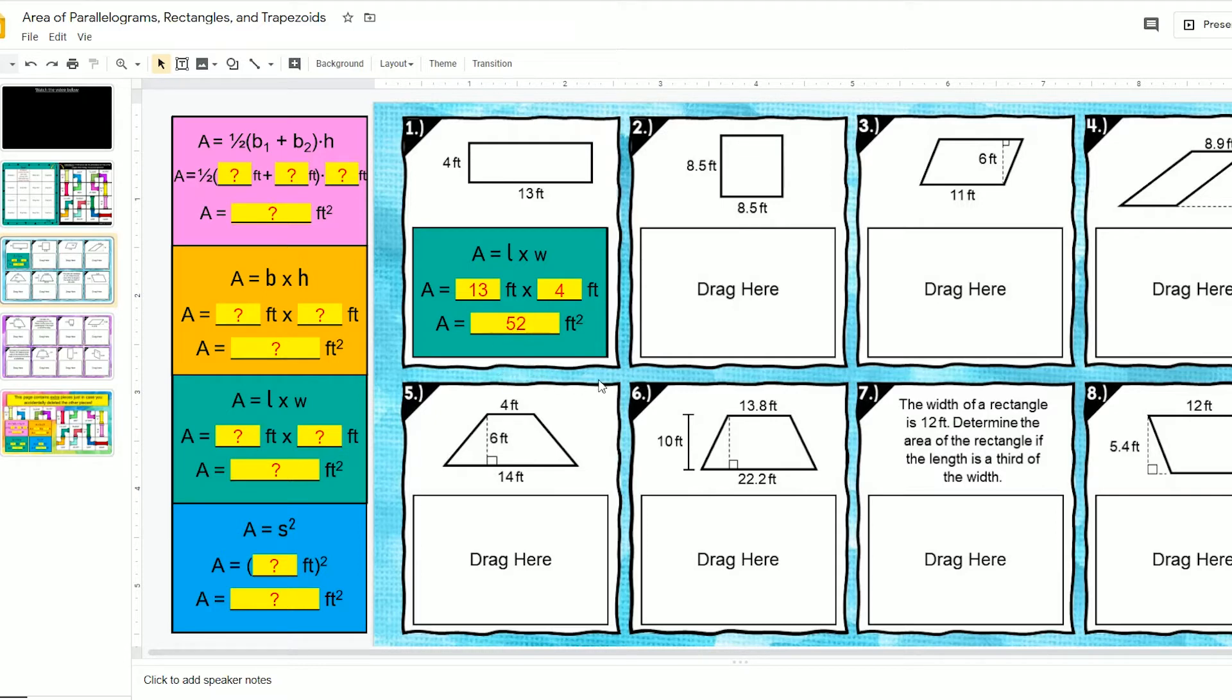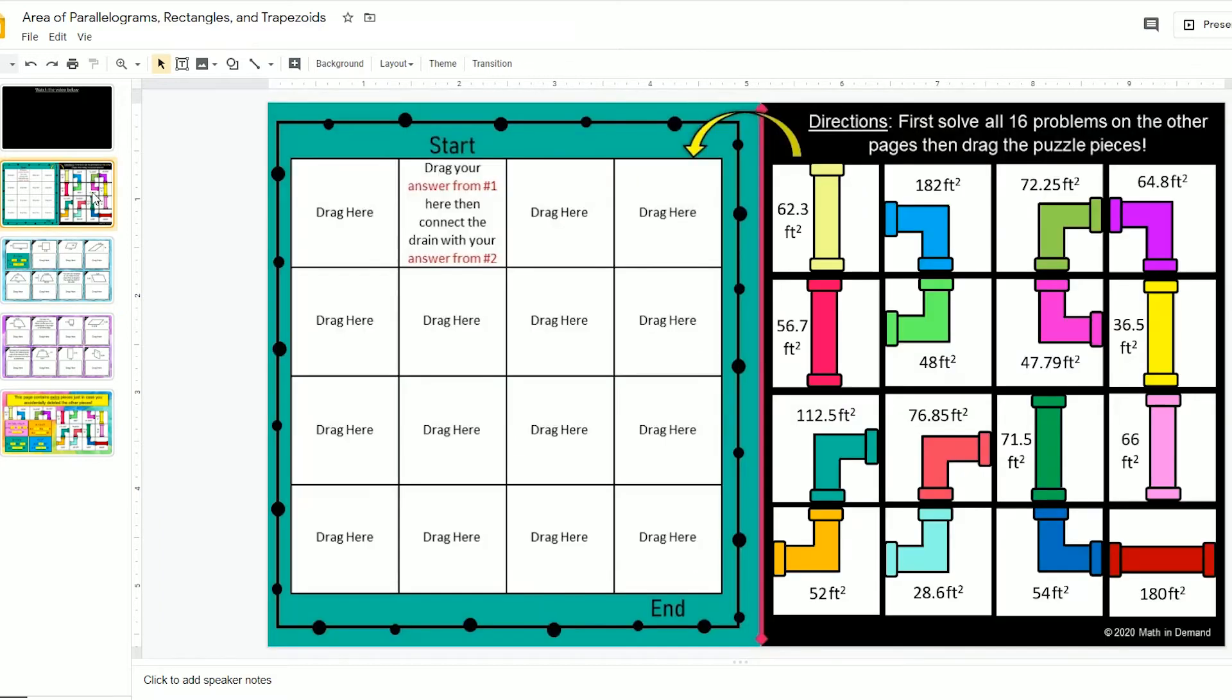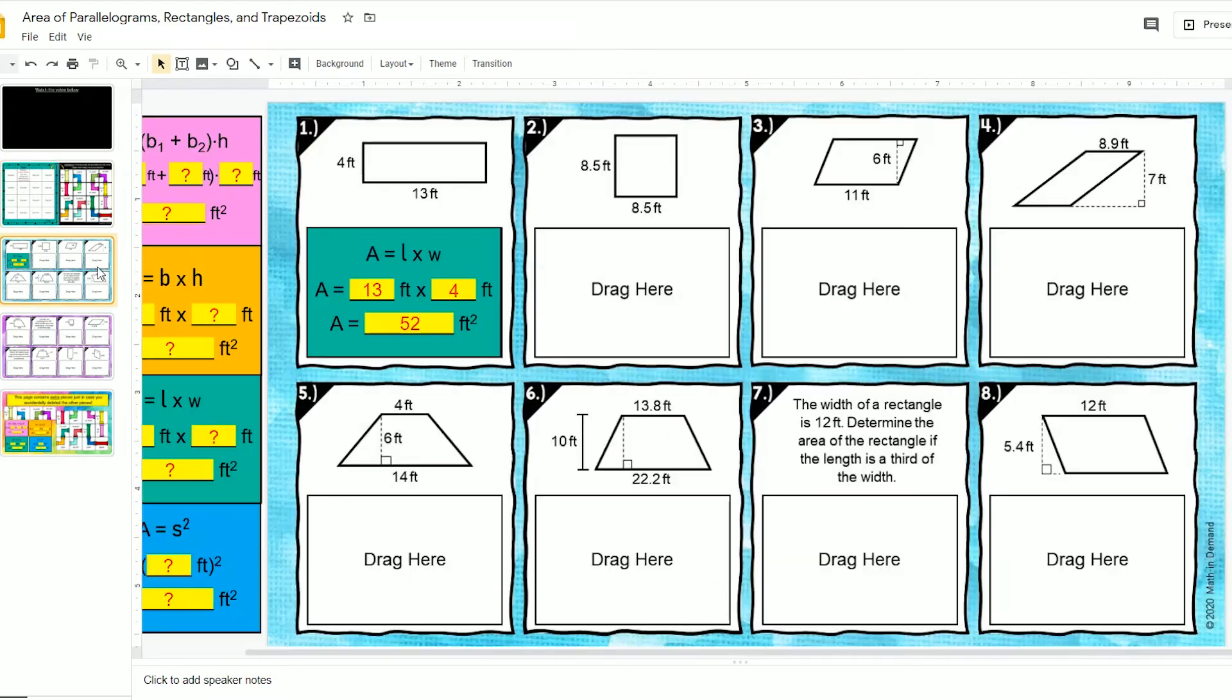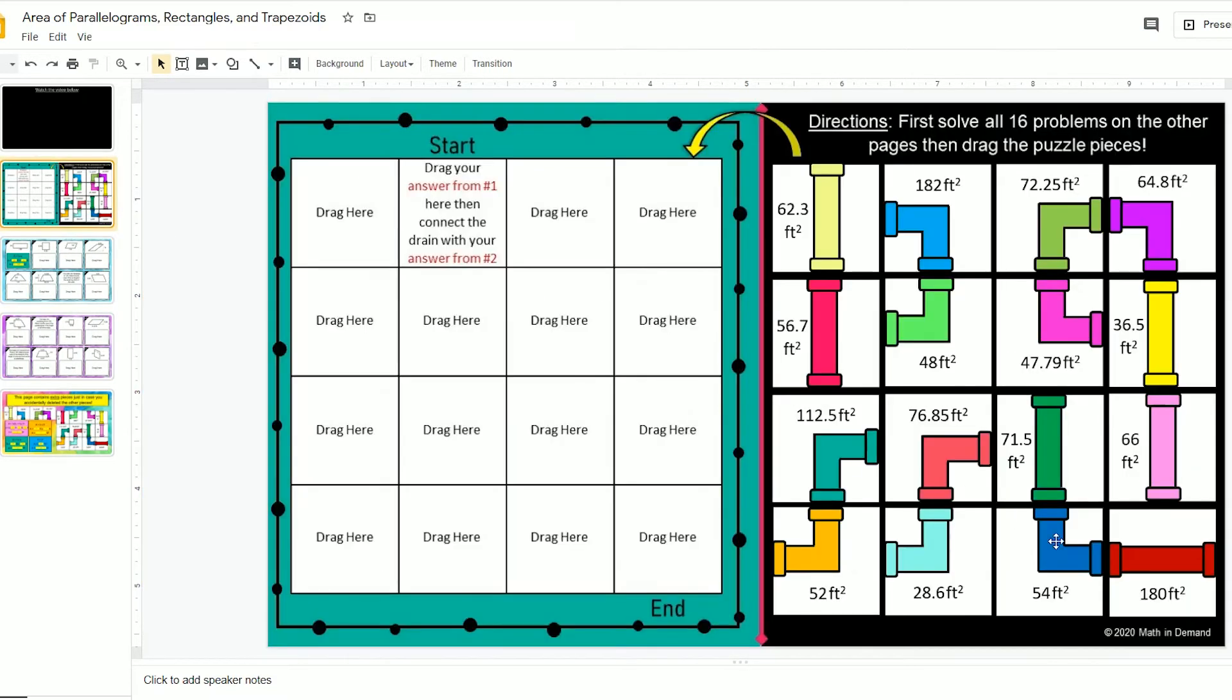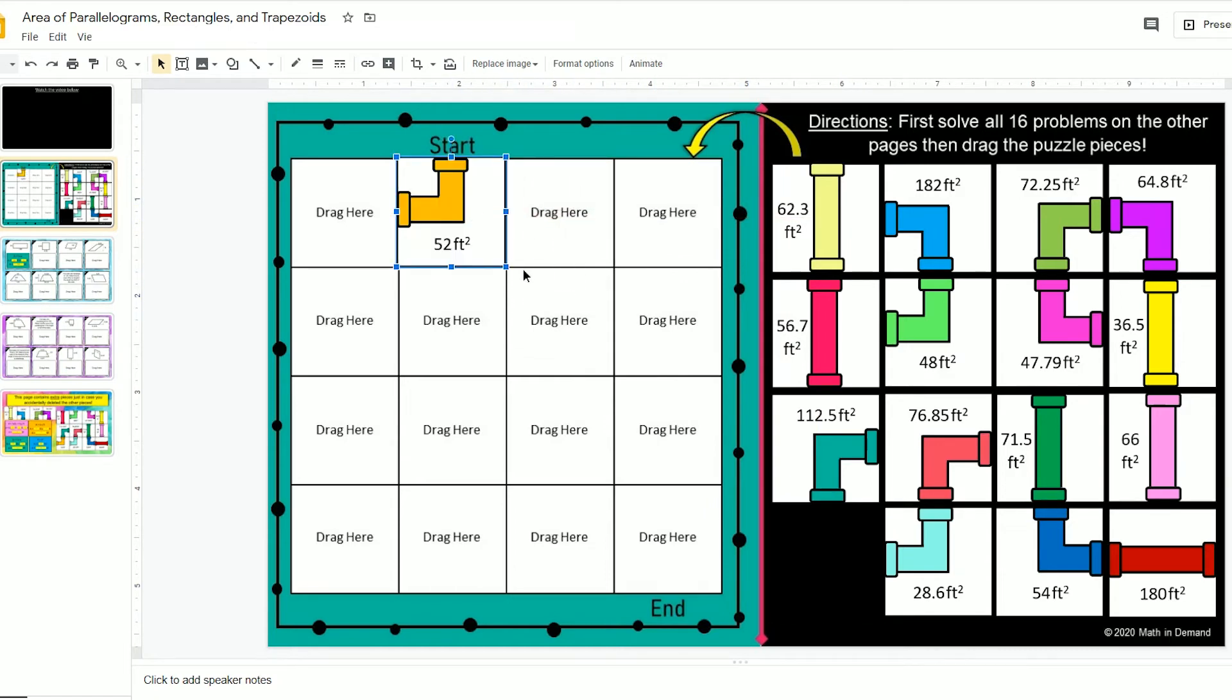I'm done with problem number 1. I'm going to go back to page 2 and look for that answer. It was 52. I come over here and look for 52, and I can see 52 right here. I'm going to drag this piece over where it says problem number 1. I will place it.